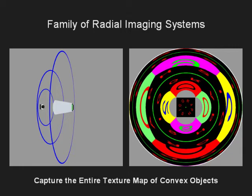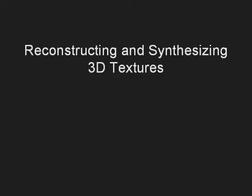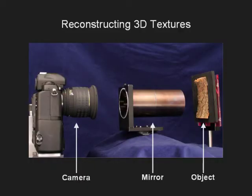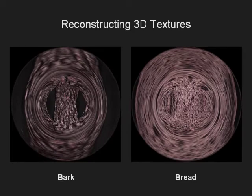We now show several radial imaging systems and their applications. Here we see a system that uses a cylindrical mirror to capture multiple high-resolution views of a 3D texture within a single image. The captured images of the bark of a tree and a slice of bread are shown here. Since each feature is imaged at least twice along a radial line, we can apply stereo to reconstruct the textures.